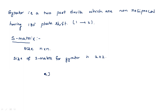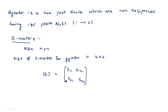The S-matrix for the gyrator is 2 by 2, meaning S equals S11, S12, S21, S22. As the gyrator is a two-port device, we have four scattering parameters: S11, S12, S21, and S22.